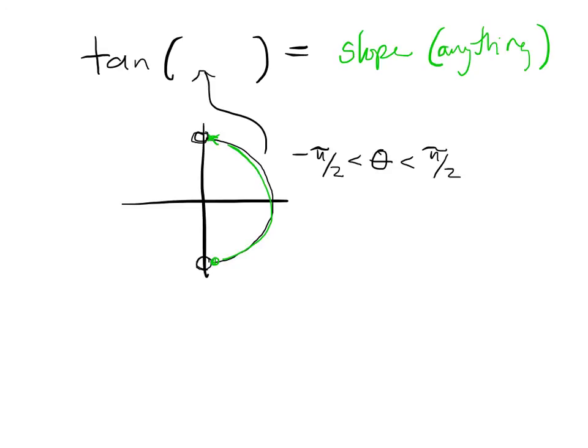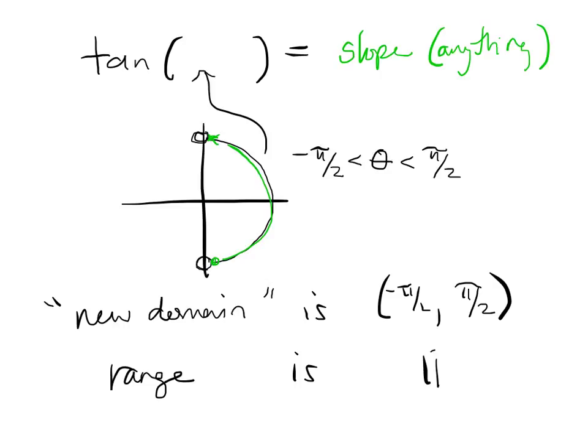So, tangent of an angle gives us a slope, and the slope can be anything. Right? Right. Okay, so, if I want to doctor my new domain, is, negative pi over two to pi over two, right? And my range is all real numbers.